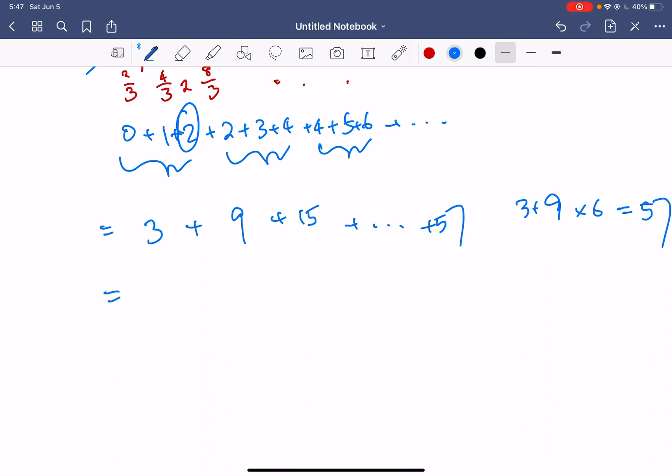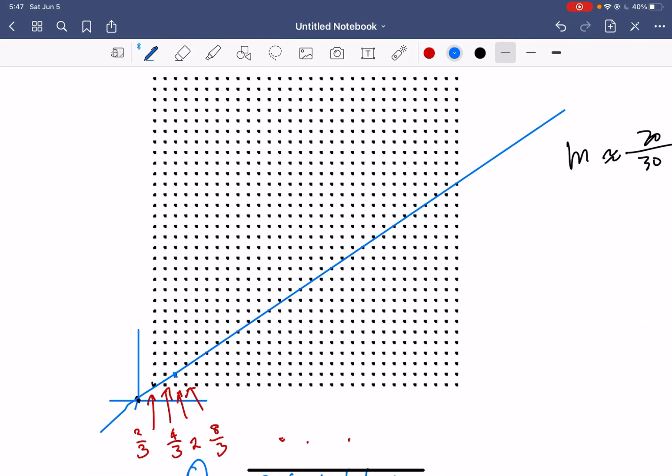Therefore, the sum of the arithmetic sequence that we have over here will be 3 plus 57 times, where we have 10 groups, divided by 2. So that would be 60 divided by 2 times 10, that would be 300. Exactly 300. We got lucky over there, and we have exactly what we want.